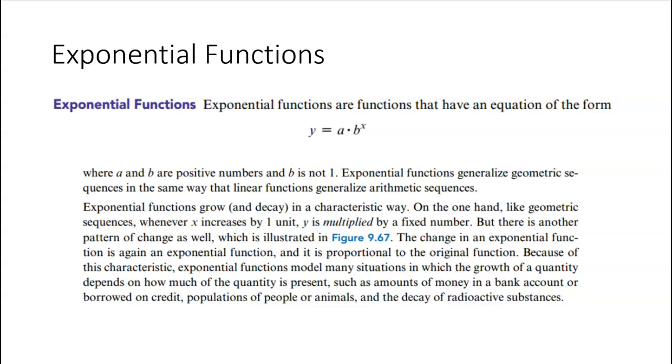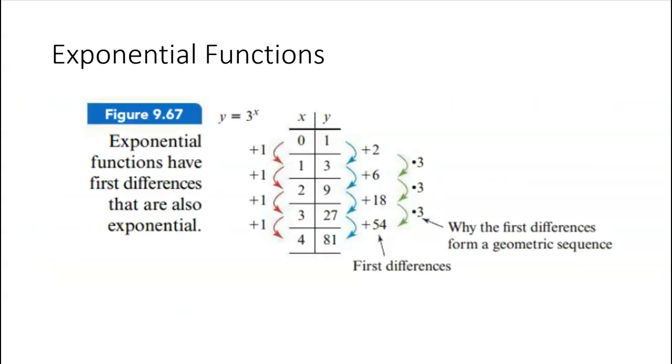And we'll learn about exponential functions where a and b are numbers and b is not 1. And these are geometric sequences. So linear functions are arithmetic and exponentials are geometric. And they can grow or decay. So when we look at an exponential graph, it can either grow or can decay. And there's another pattern. And let's just kind of take a look at that. But where will we see these in real life? We'll see these in money with interest, credit, populations of people or animals, or carbon decay. So that's where we see exponential functions in real life.